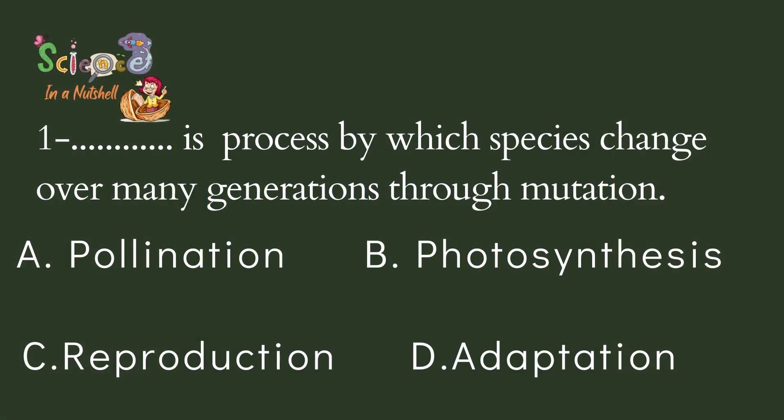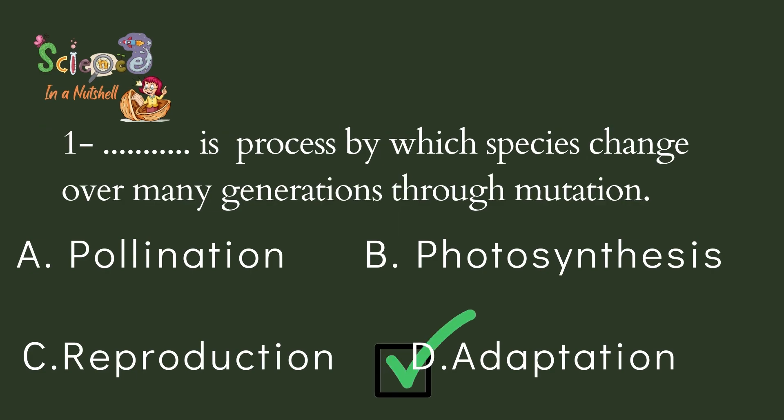Let's solve some questions. Question number one: What is the process by which species change over many generations through mutation? Is it pollination, photosynthesis, reproduction, or adaptation? Yes, that's right — it's adaptation.